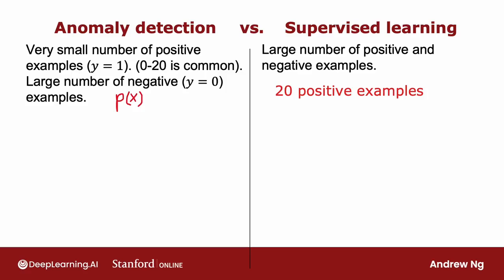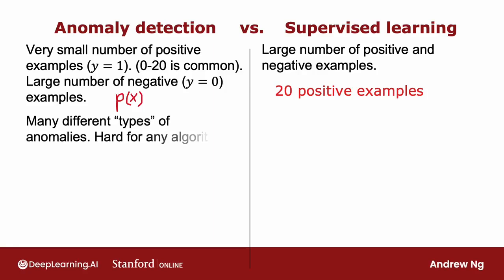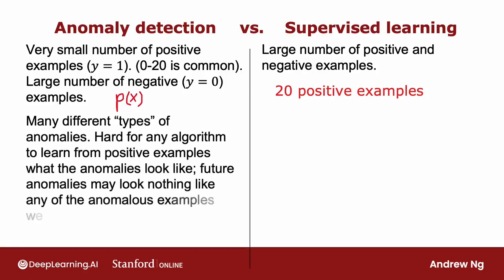Here's the main difference: if you think there are many different types of anomalies or many different types of positive examples, then anomaly detection might be more appropriate. When there are many different ways for an aircraft engine to go wrong, and if tomorrow there may be a brand new way for an aircraft engine to have something wrong with it, then your 20 positive examples may not cover all of the ways that an aircraft engine could go wrong.